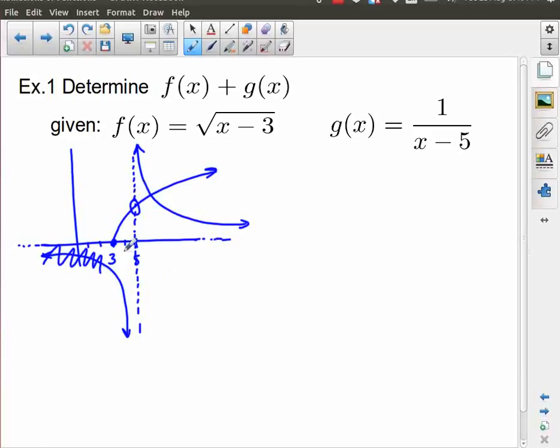Now that's from the graph, and the graph is helpful for helping us visualize this, but what if we looked at this in terms of the domain? The domain of F would normally, for the parent function, it would be X greater than or equal to 0, but in this case it's been shifted to the right by 3, and so that would be X member of R, such that X is greater than or equal to 3.